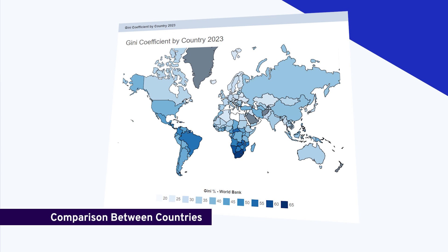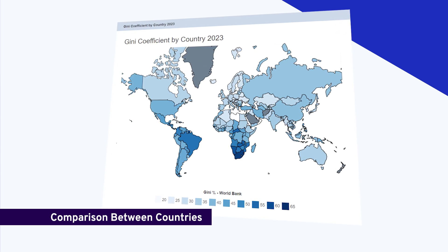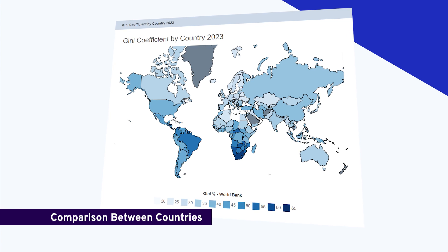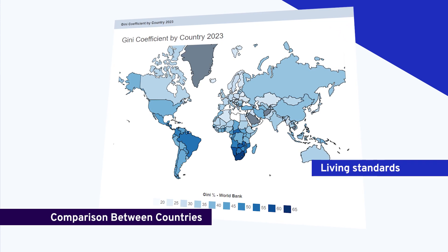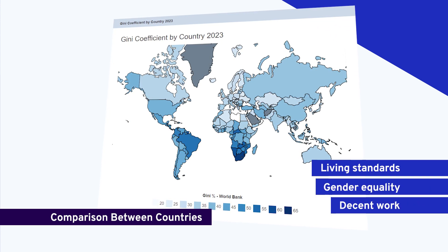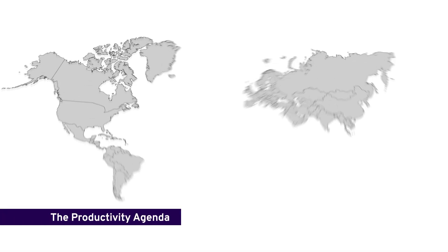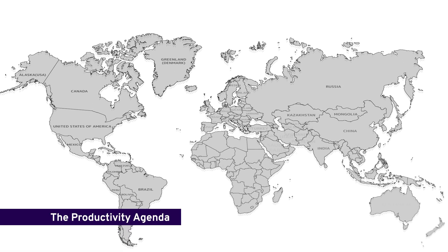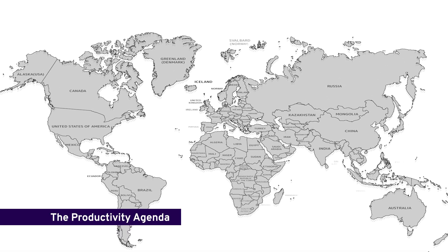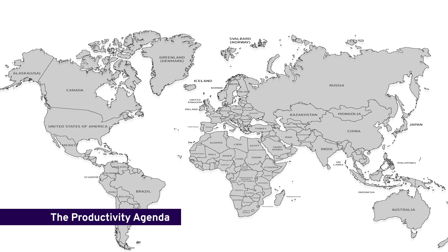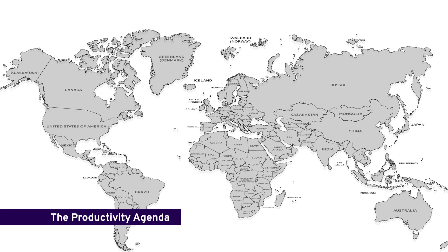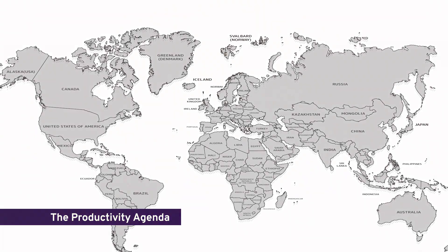Productivity statistics also enable comparison between countries and over time of important social economic areas such as living standards, gender equality, and the availability of decent work. Depending on their level of economic development, countries emphasize different factors contributing to their productivity performance.